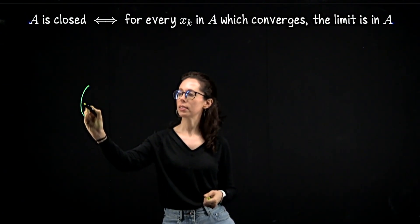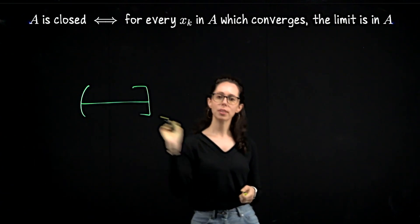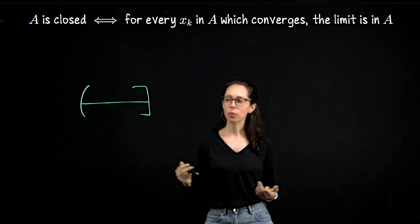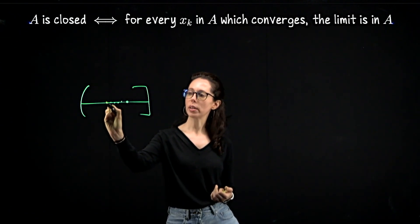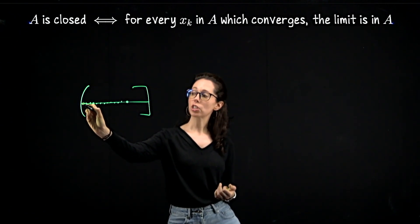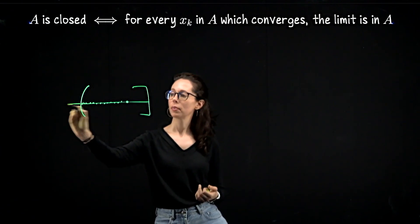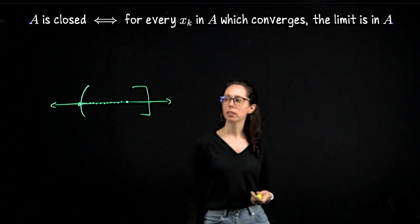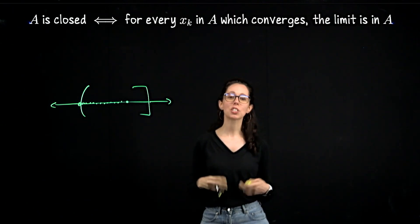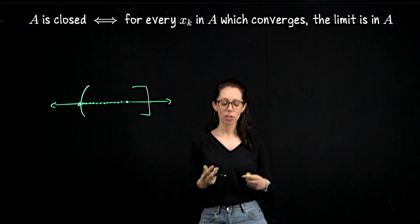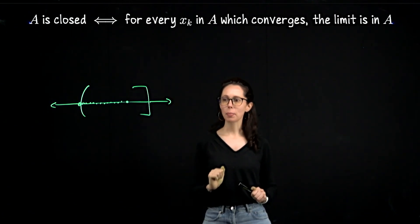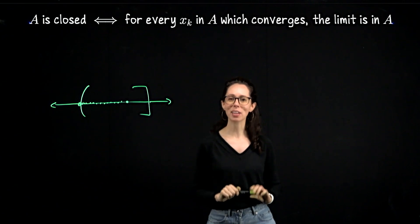To emphasize here the importance of where the limit lives, consider this set which is not closed as a subset of the real number line. I can design a sequence of points, say going to the left, which converges on R, but it converges to a point that left edge of the interval which is not a member of the set. So what we're saying is that this behavior cannot happen in closed sets.